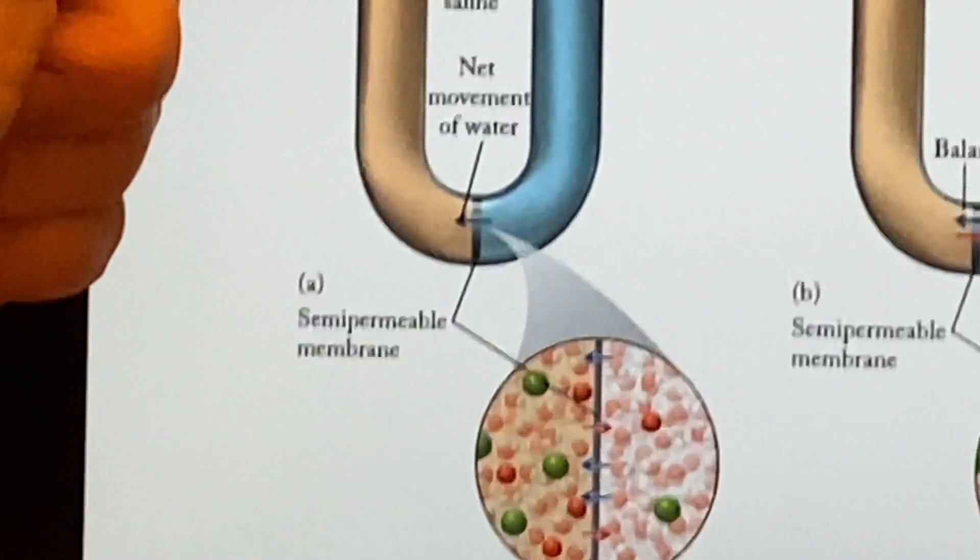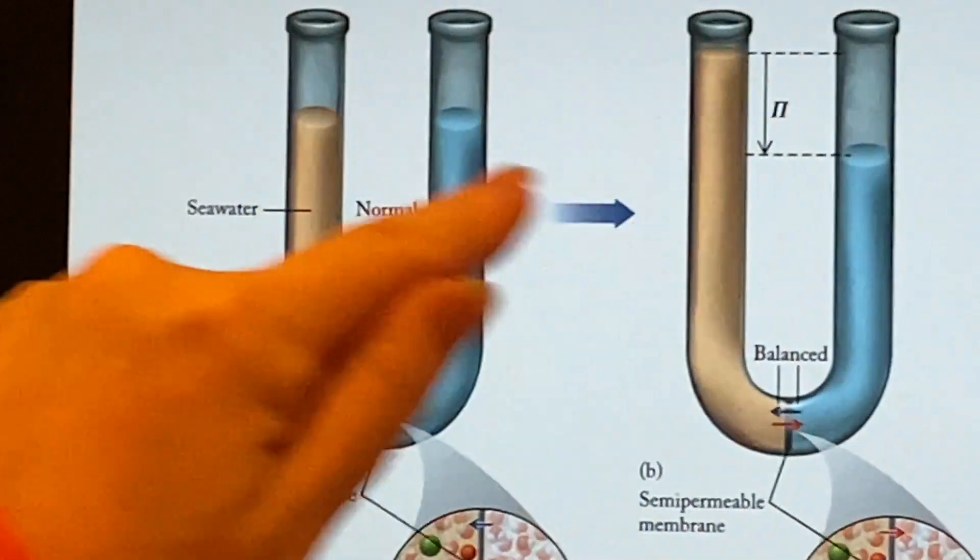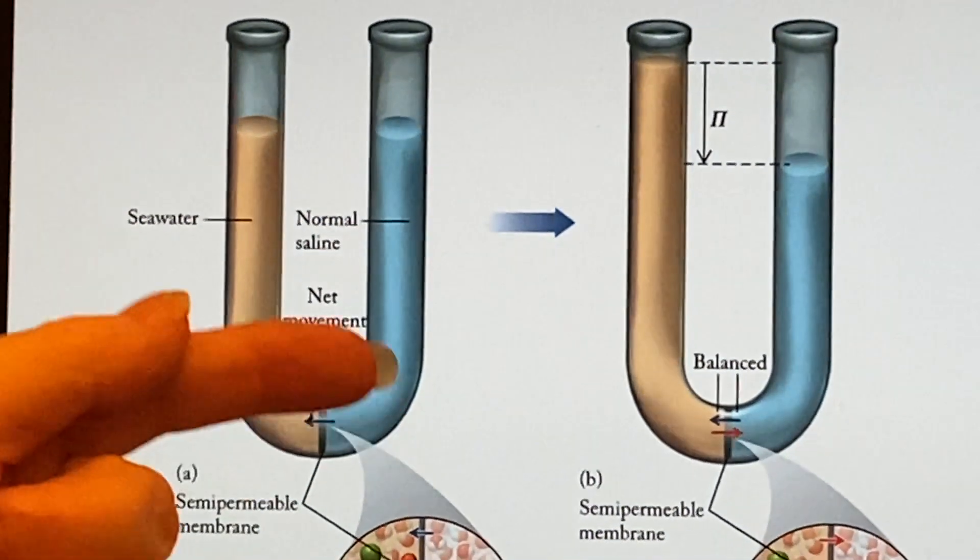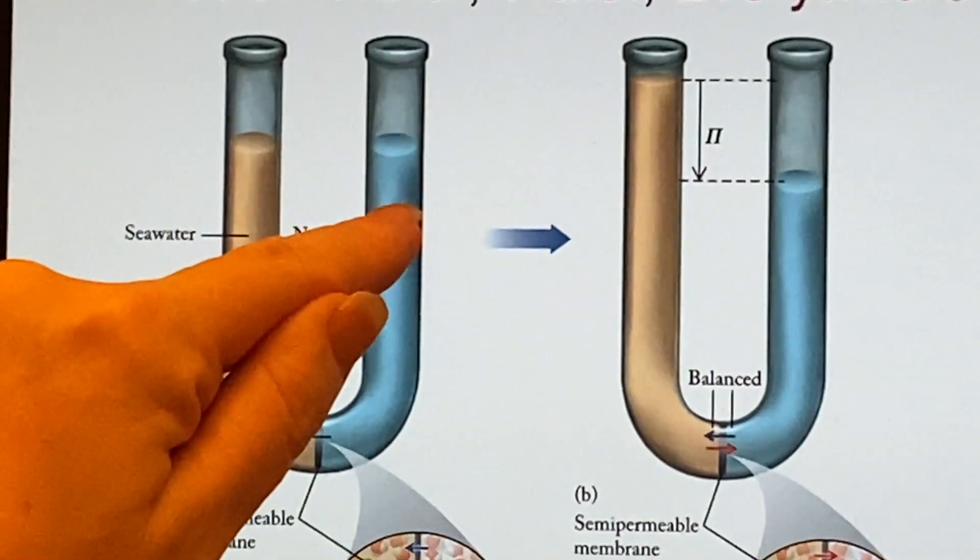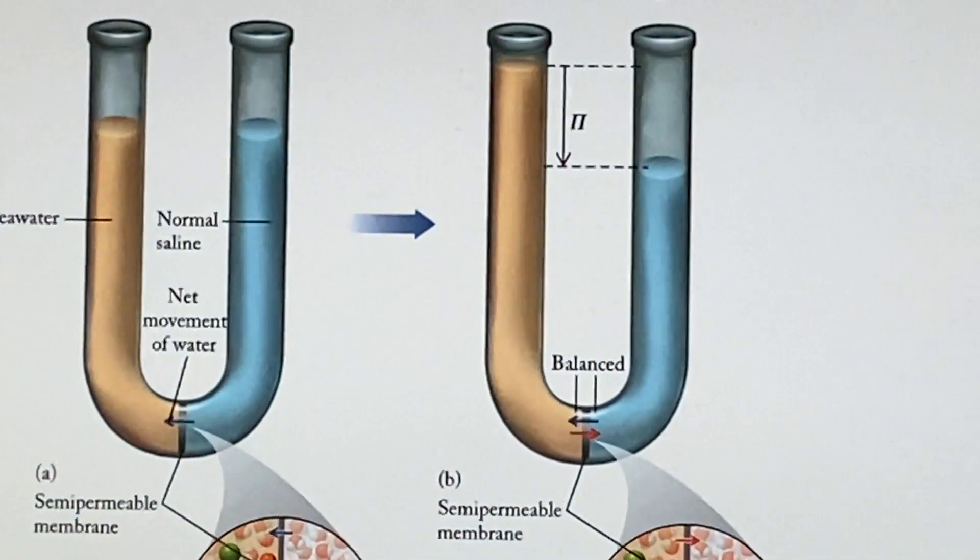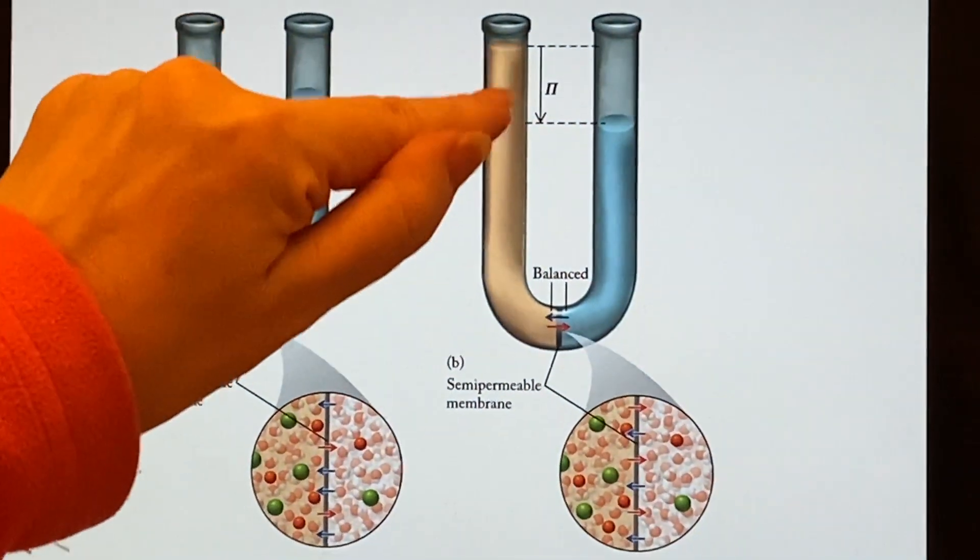Well, if the water keeps moving this way, this side is going to have to go up as far as what the level is. At the same time that's happening, this side is going to have to also go down because the water is leaving this side. Eventually it will stop moving, and you'd be able to measure the difference in height here.